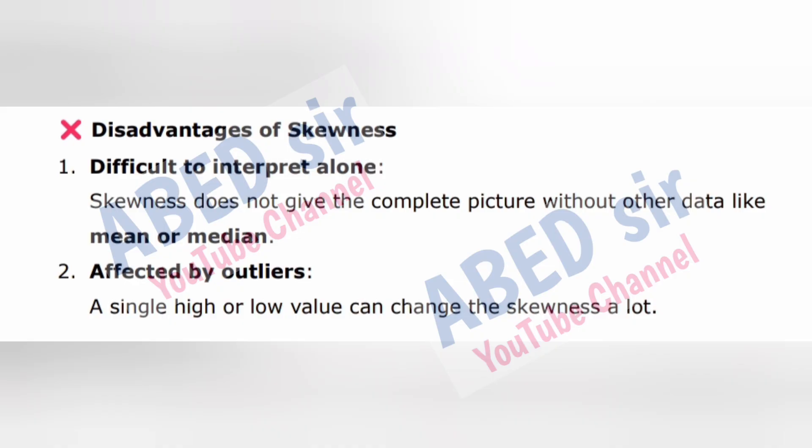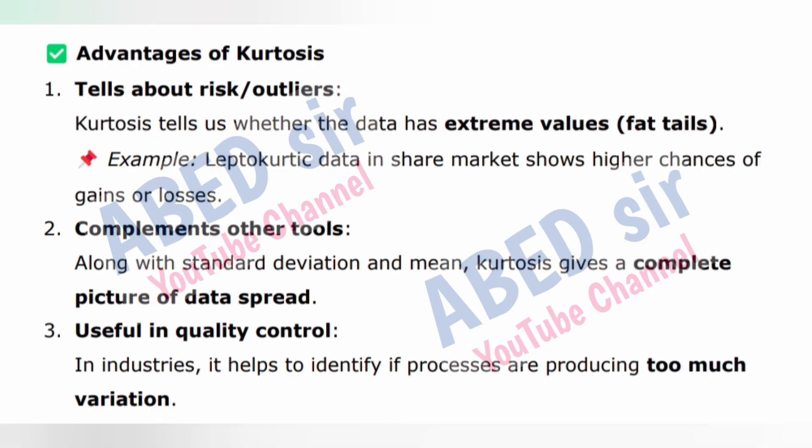Disadvantages of skewness: 1. Difficult to interpret alone — skewness does not give the complete picture without other data like mean or median. 2. Affected by outliers — a single high or low value can change the skewness a lot. Advantages of kurtosis: 1. Tells about risk and outliers — kurtosis tells us whether the data has extreme values (fat tails). Example: leptokurtic data in share market shows higher chances of gains or losses. 2. Complements other tools — along with standard deviation and mean, kurtosis gives a complete picture of data spread.